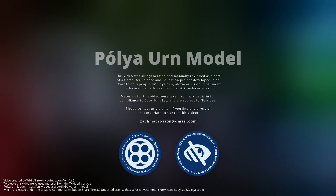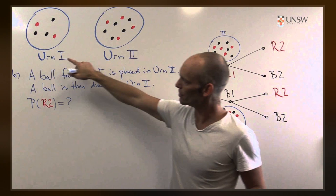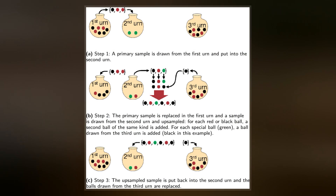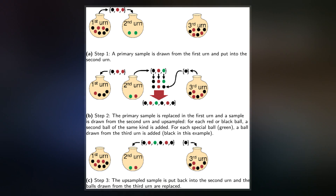In statistics, a Polya Urn model, named after George Polya, is a type of statistical model used as an idealized mental exercise framework, unifying many treatments. In an urn model, objects of real interest are represented as colored balls in an urn or other container.